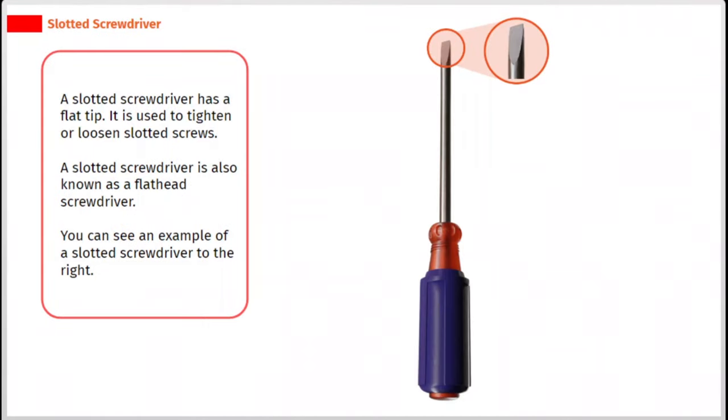A slotted screwdriver has a flat tip. It is used to tighten or loosen slotted screws. A slotted screwdriver is also known as a flathead screwdriver. You can see an example of a slotted screwdriver to the right.